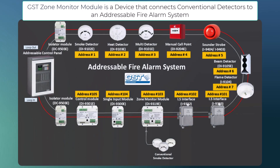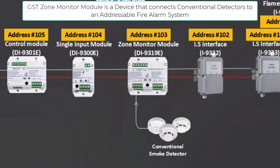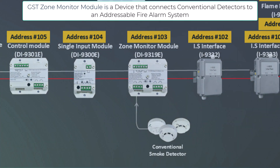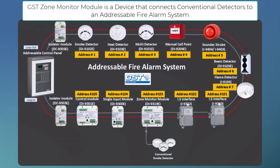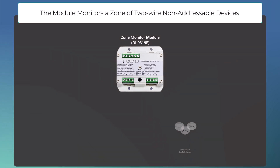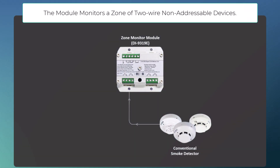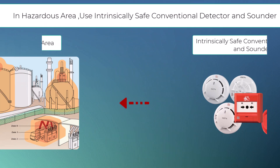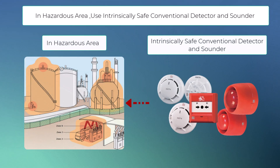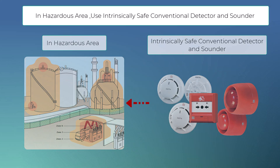Welcome to my YouTube channel. The GST zone monitor module is a device that connects conventional detectors to an addressable fire alarm system. The module monitors a zone of two-wire non-addressable devices. In hazardous areas, use intrinsically safe conventional detectors.